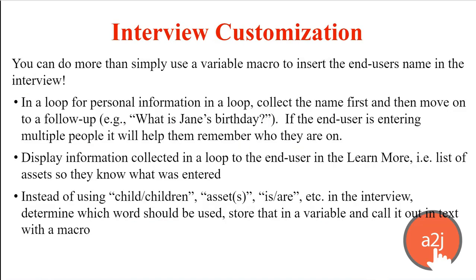You can do more than simply use a variable macro to insert an end user's name in a simple question. For example, in a repeat loop, it's particularly helpful to call out the name or whatever that piece of information is that you're looking for. You collect the name first and then move on with the follow-up. If the end user is entering multiple people, it helps them greatly remember who specifically you're asking that follow-up question on.